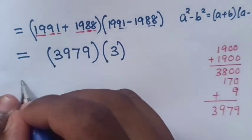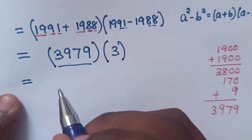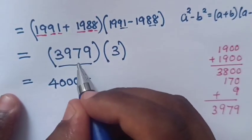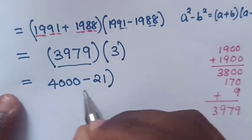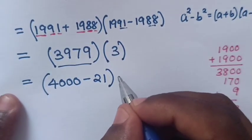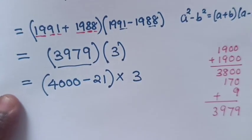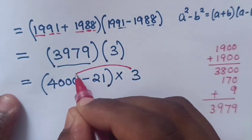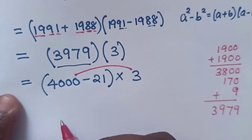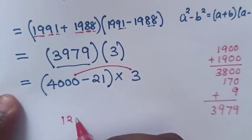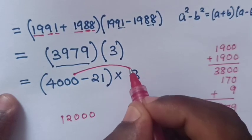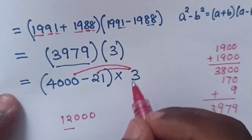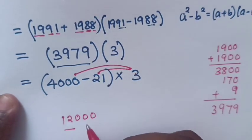To multiply here, simple way to form 3979 is same as 4000 minus 21, times 3. Now, 3 we multiply by 4000, it will be equals to 12000. Minus, again we multiply by 21, so to be minus 63.